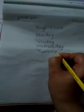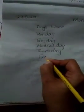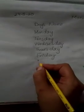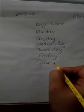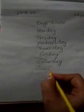Thursday — T-H-U-R-S-D-A-Y — Thursday. Friday — F-R-I-D-A-Y — Friday. Saturday — S-A-T-U-R-D-A-Y — Saturday. Sunday — S-U-N-D-A-Y — Sunday. Okay, these are the names of the days.